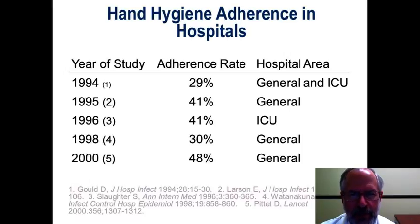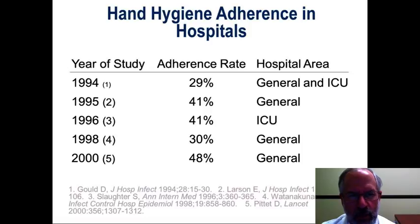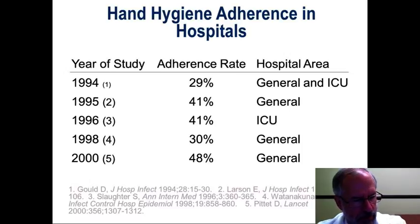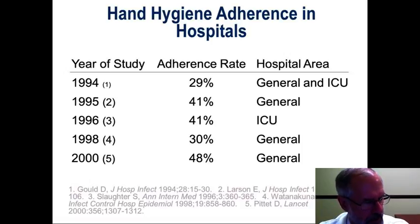Despite the long-recognized importance of hand hygiene, adherence to this protocol in hospitals is quite variable. Reports in the literature show adherence rates clearly below what would be desired. However, the overall trend from 1994 through 2000 is at least generally increasing. In 1994 the level was 29% in general and intensive care units, and by the year 2000 it reached around 48% — still less than half and far below optimal, but at least the word is being transmitted and resulting in appropriate changes in practice.